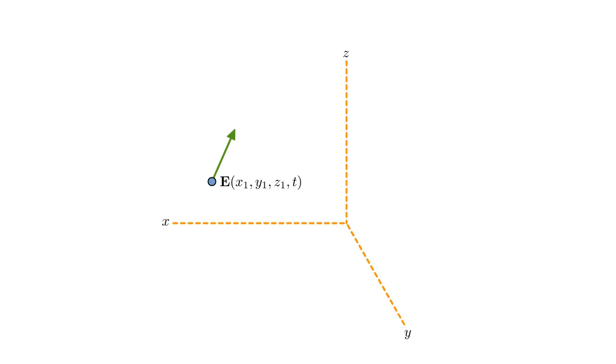At a given time and at a given point, we can represent this as an arrow based at that point. The arrow length represents the field amplitude, and the arrow direction, the field direction. At different points, the field has different values. The way the field changes through space and time is governed by a field equation.